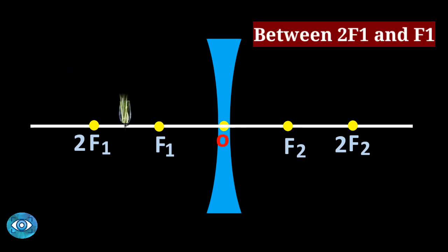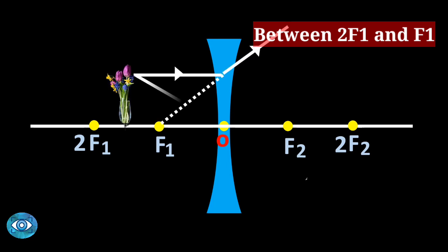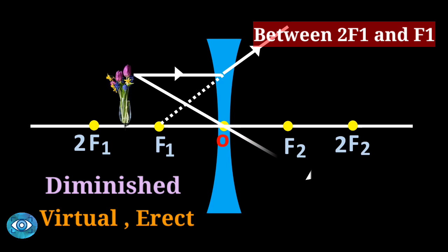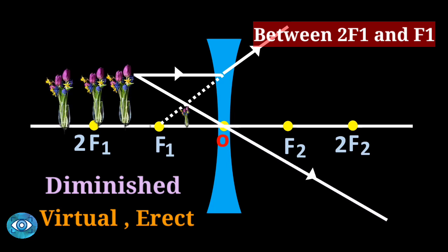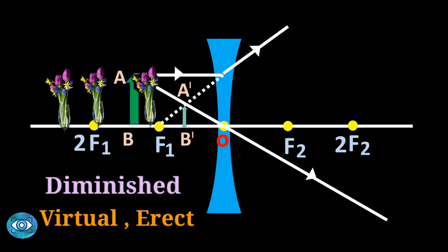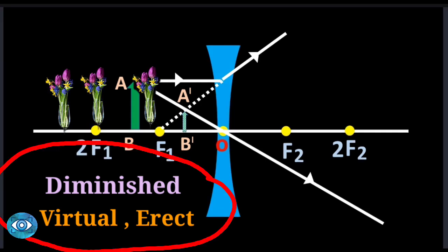In the next case, you can again see the position of the image is between f1 and O. This means wherever the object may be placed, for a concave lens, the image will always be formed between f1 and O. Remember: for a concave lens, wherever the object is placed, the image properties remain the same.